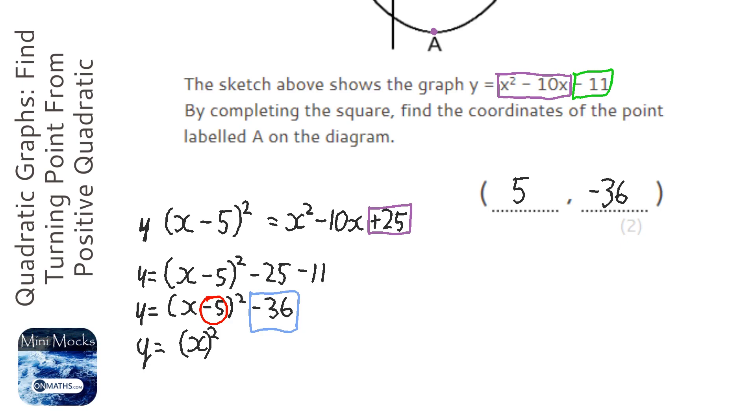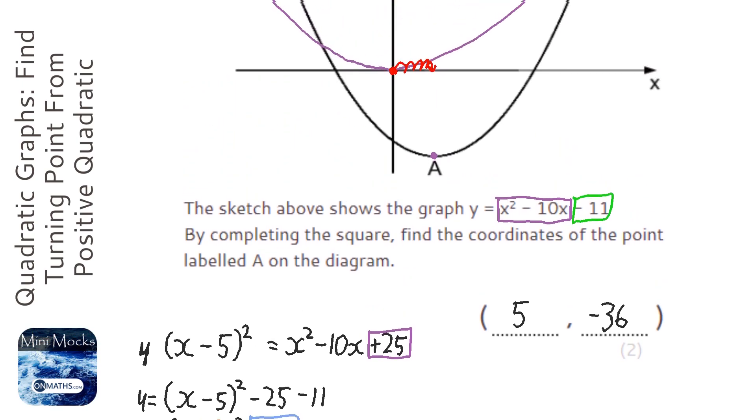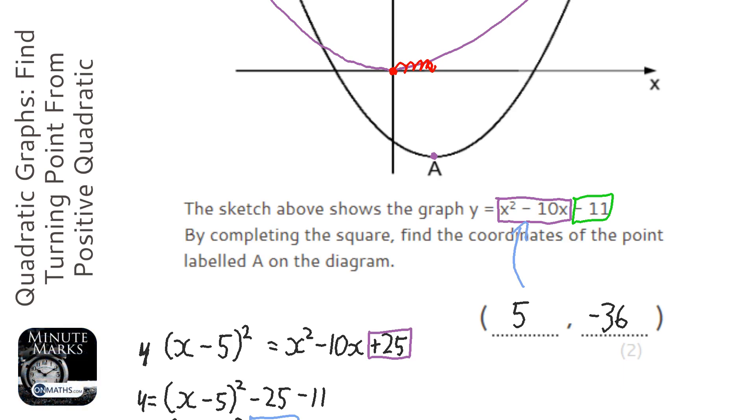But what I'd heavily recommend you do is put the x coordinate into the equation, so do 5 squared minus 10 times 5 minus 11. You'll get minus 36 as well. However, when these get more complicated, it becomes a lot easier just to put the x coordinate in and find out what the y coordinate is.